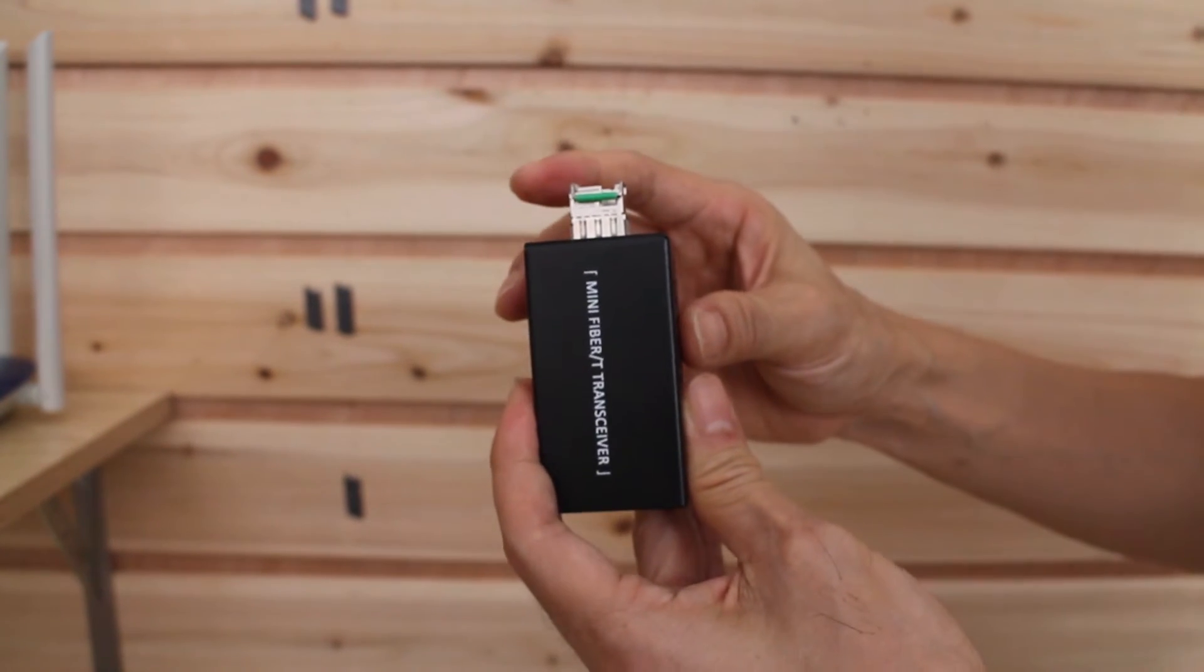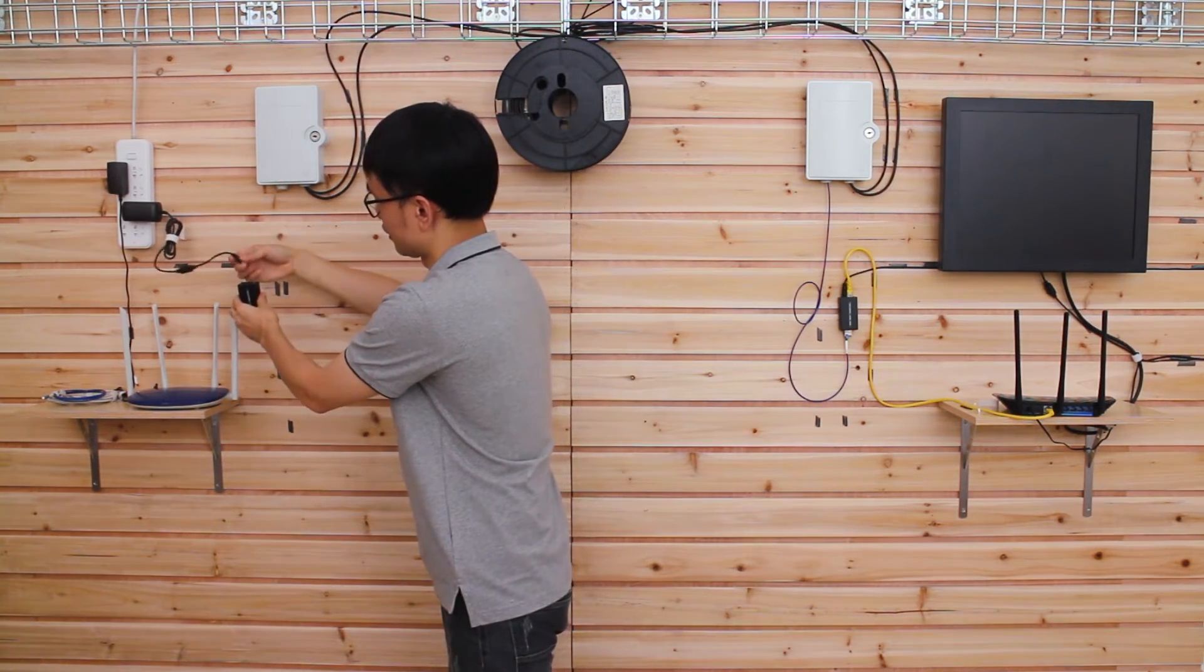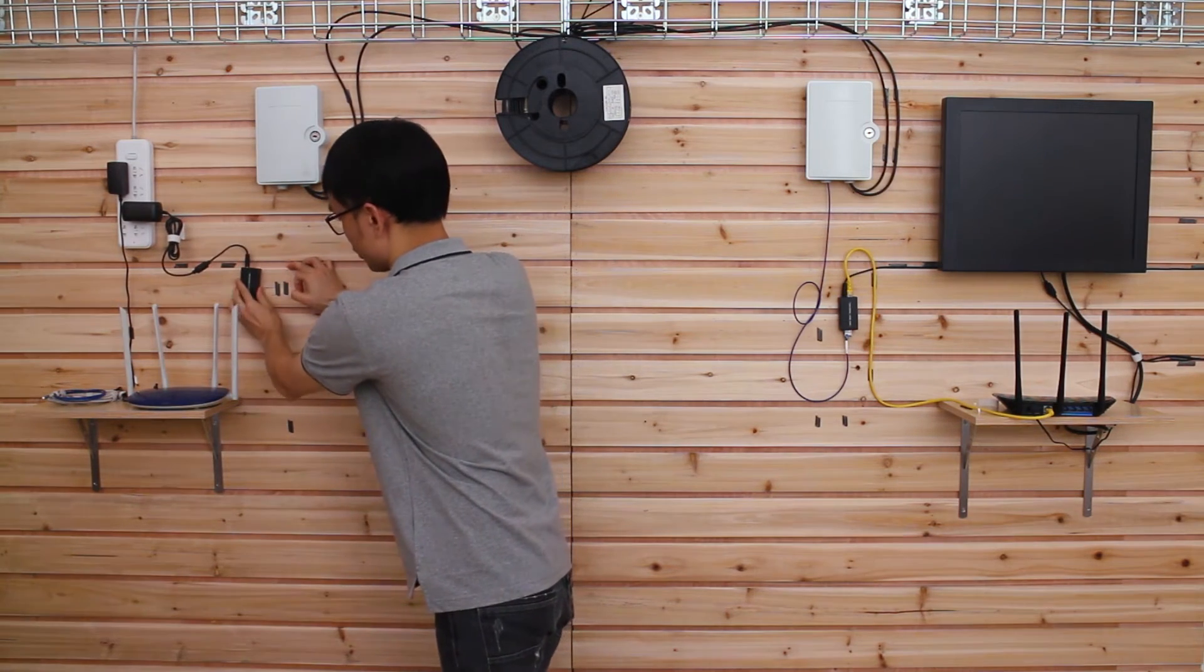Also we need to install an SFP transceiver. Now let me power up the media converter. This is DC power. And put it on the wall.